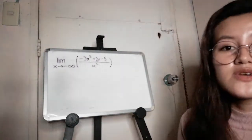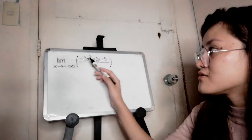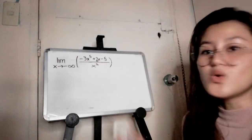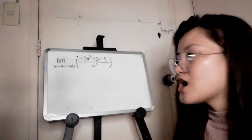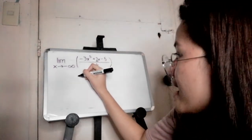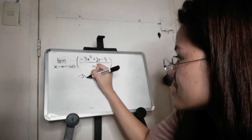So in this case we have three choices for the numerator. We have negative 3x to the power of 5, 2x, and minus 5. So what do you think has the highest degree? Obviously, we have 3x to the power of 5.